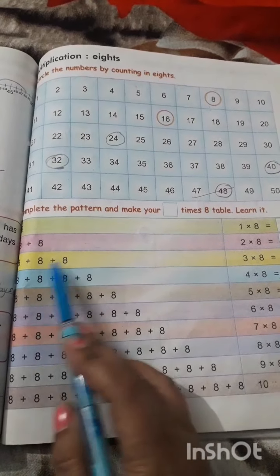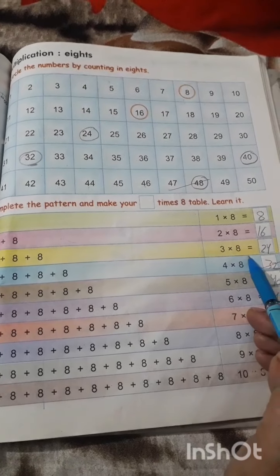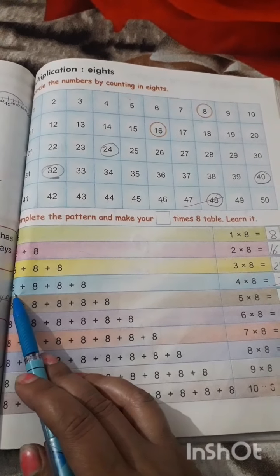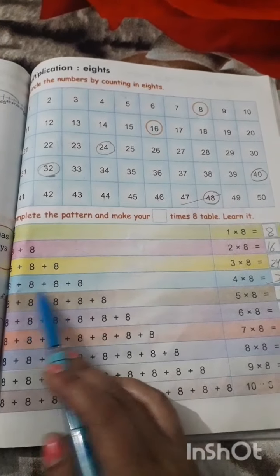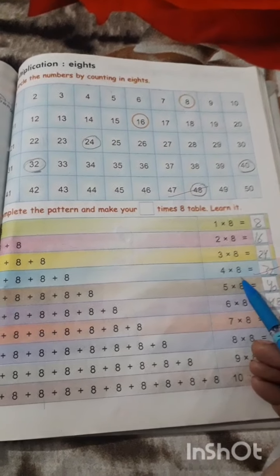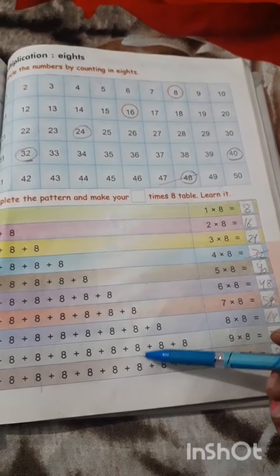How many times? 3 times. 1, 2, 3. 3 times 8. 3 8s are 24. 1, 2, 3, 4. 4 times 8. 4 8s are 32. Do rest of the parts yourself.